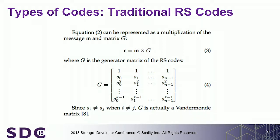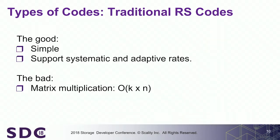What can we say about RS codes? They are simple. They support systematic, non-systematic, and adaptive rates, and you can do plenty of optimizations. But the bad part: the complexity of computing the code is basically a matrix multiplication — K multiplied by N. It's okay if you have 10+5 because you have 50 operations, but if you use a code with hundreds of data and hundreds of parities, you have 10,000 operations. That's a problem.